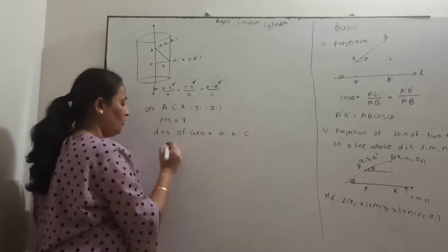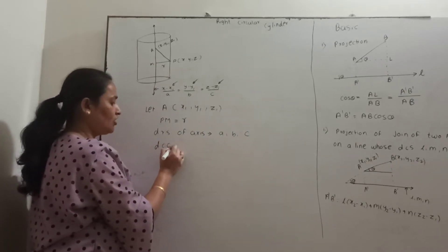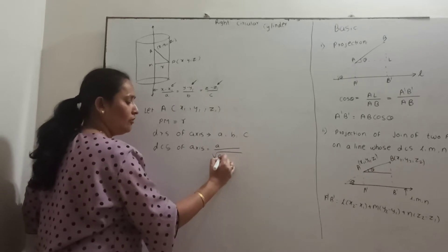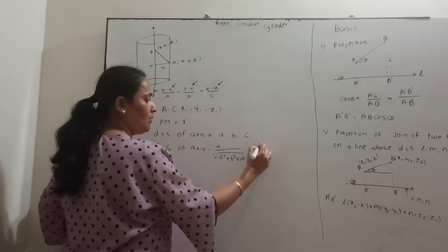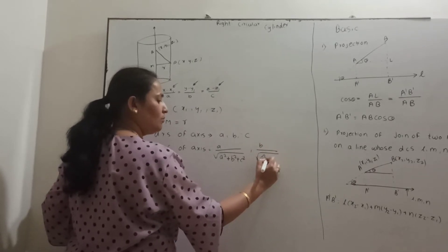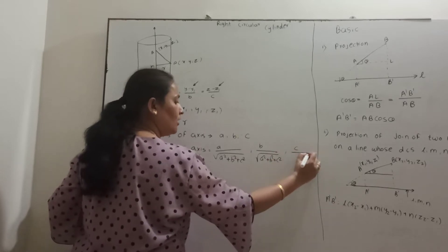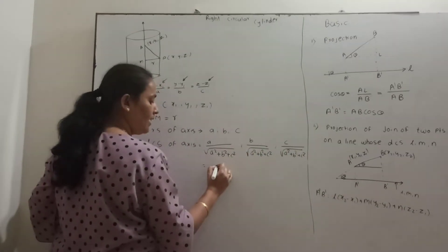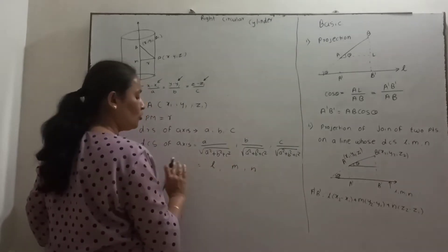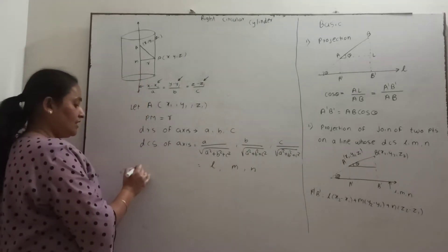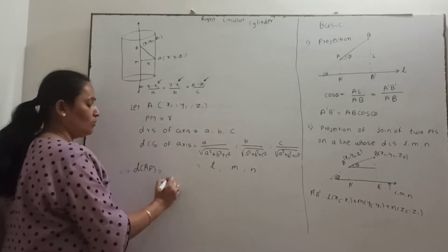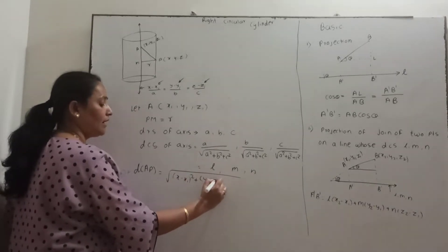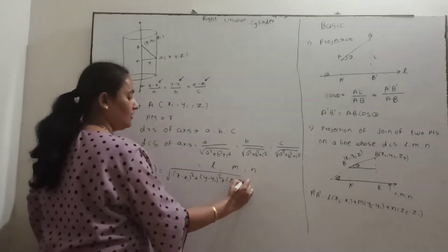Once we have the direction ratios, we can find the direction cosines of the axis. The direction cosines are: l = A / √(A² + B² + C²), m = B / √(A² + B² + C²), n = C / √(A² + B² + C²), denoted by L, M, and N. Now we find distance AP using the distance formula: AP = √[(x − x₁)² + (y − y₁)² + (z − z₁)²].